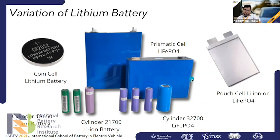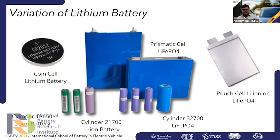These are the prismatic lithium iron phosphate cells, which we use in energy storage systems because they have a larger capacity of up to 100 amp-hours. For compact devices like mobile phones, we use the pouch cell, which can be lithium-ion or lithium iron phosphate.